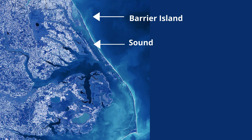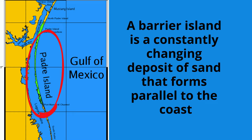Barrier islands are formed by sediment that is transported by waves and currents from the mainland. They protect the mainland from erosion and storm surge.